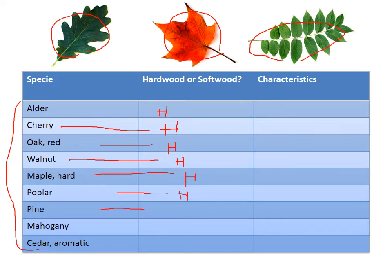Pine is a softwood — our first softwood tree. This is one we do have in our canyons. Lots of pine. Its characteristics are very sappy and kind of a yellowish-brown color.